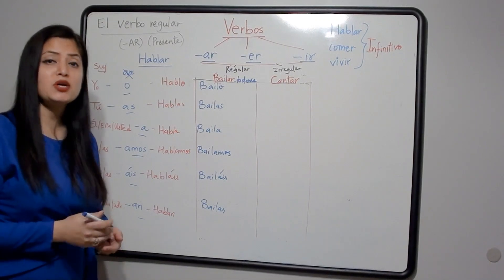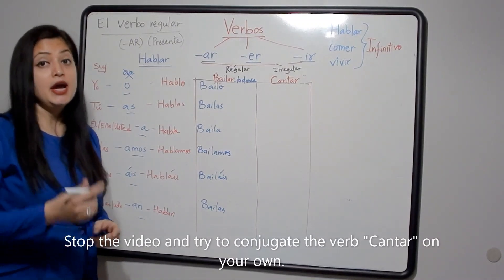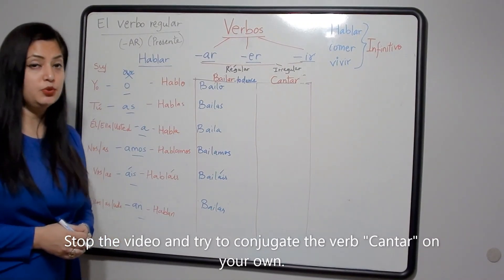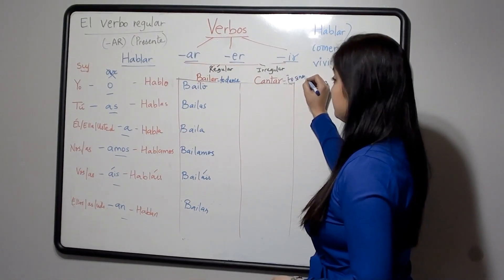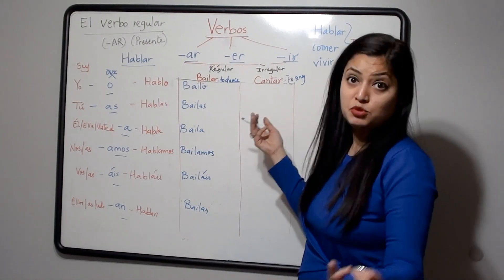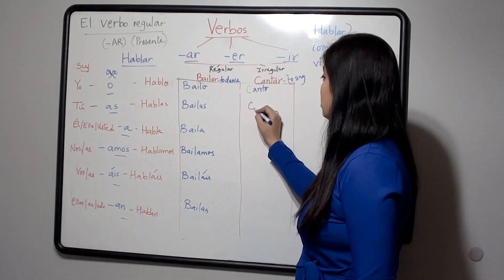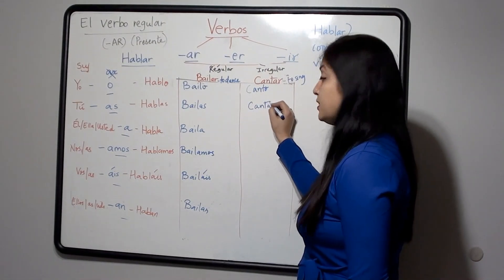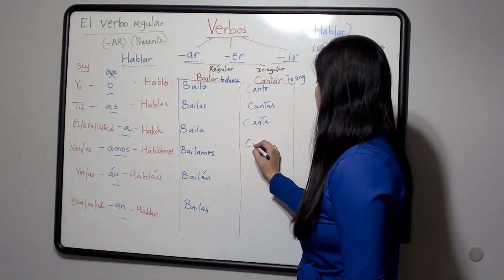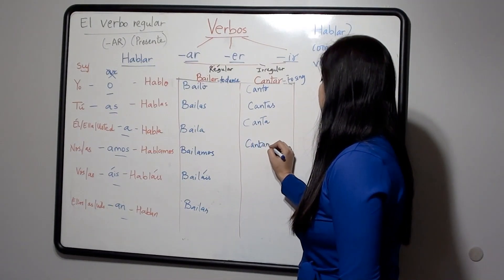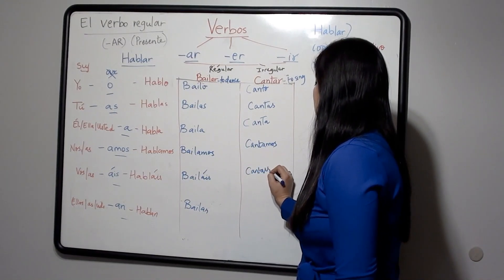I would suggest you pause the video and try to conjugate the verb cantar on your own before I do it. Cantar means 'to sing.' Once you are done, restart the video. The conjugation of cantar is: canto, cantas, canta, cantamos, cantáis, cantan.